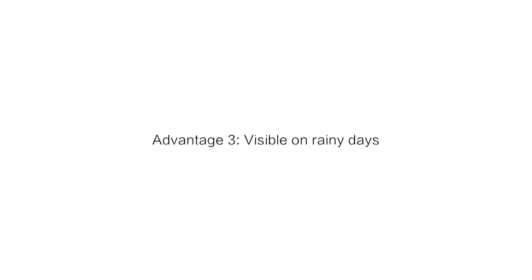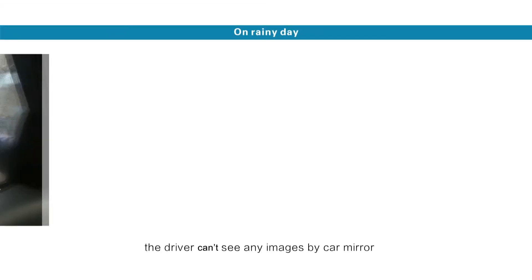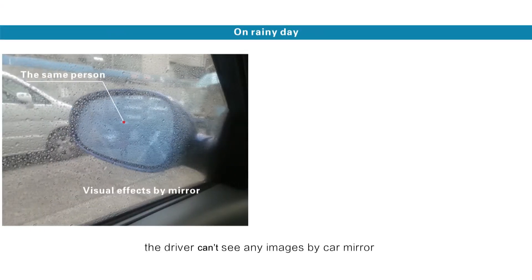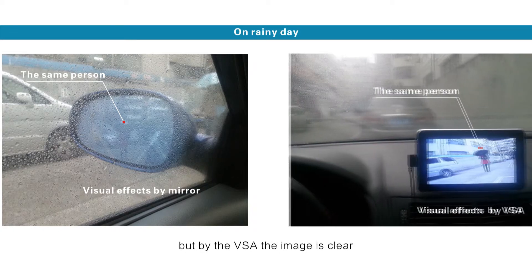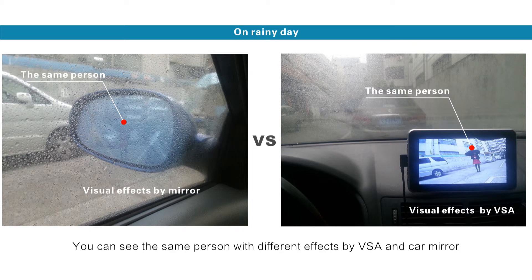Advantage 3: Visible on foggy days. On foggy days, the driver can't see any images by car mirror, but with the VSA the image is clear, bright and without raindrops. You can see the same person with different effects by VSA and car mirror. The VSA can connect with GPS navigation, car DVD, or other displays with video-in function.